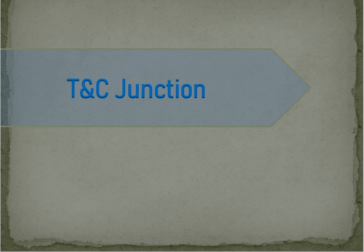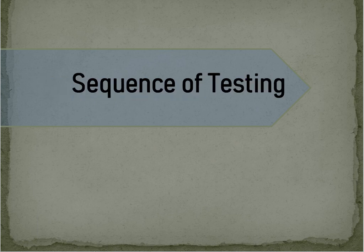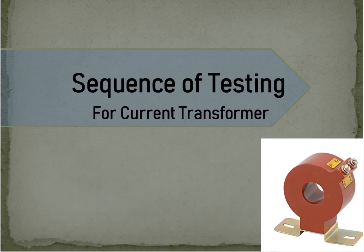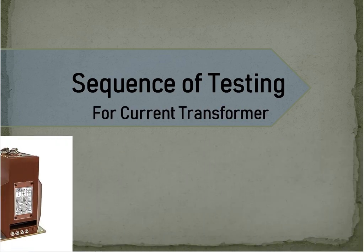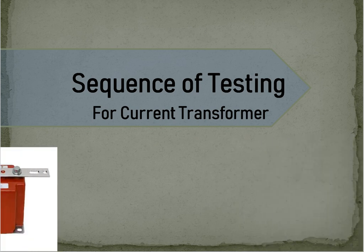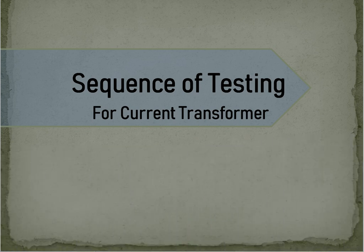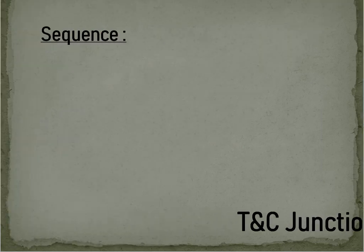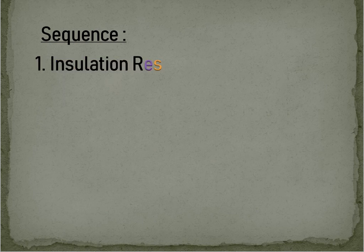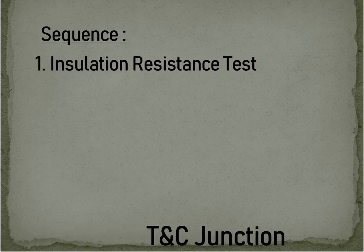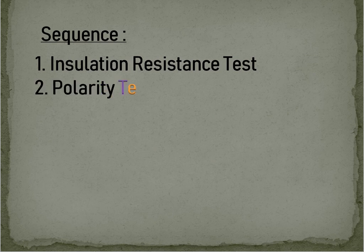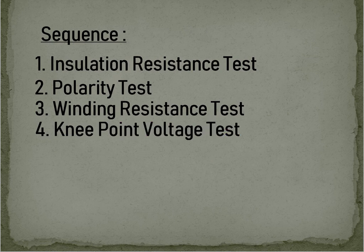Welcome to TNC Junction. The sequence of testing for Current Transformer is as follows: 1. Insulation Resistance Test, 2. Polarity Test, 3. Winding Resistance Test, 4. Knee Point Voltage Test, 5. Ratio Test.